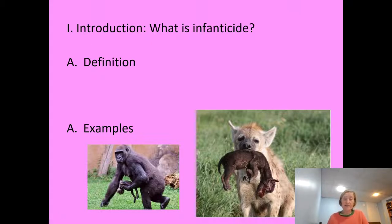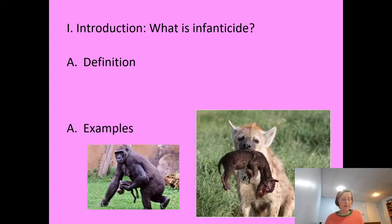Hrdy suggested that infanticide is an evolved reproductive strategy — a strategy that animals use to increase their reproductive fitness. Here are some examples of animals that practice infanticide; it's been found throughout the animal kingdom. A lot of primates practice infanticide, as do dolphins, insects, fish, other mammals — a huge variety of animals. And there are different kinds of infanticide.